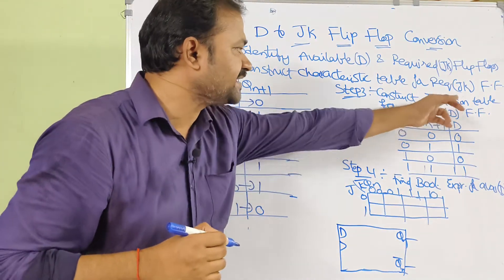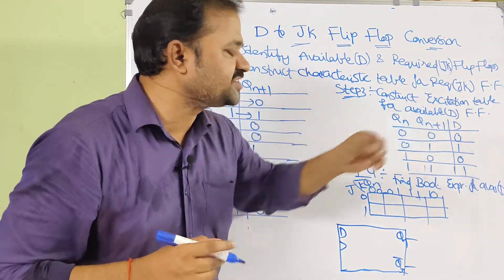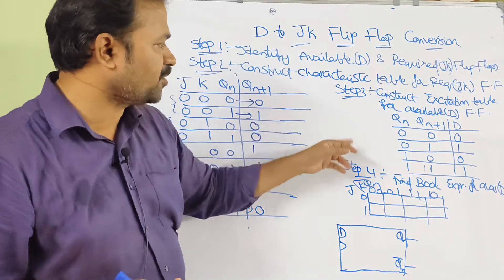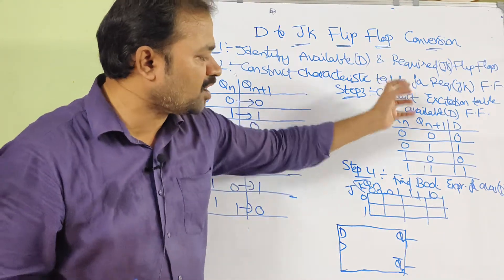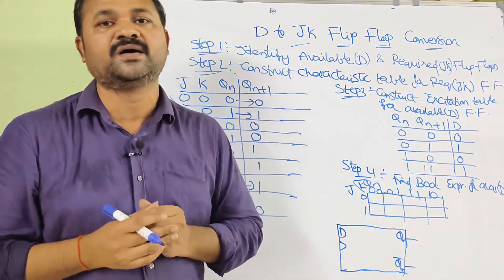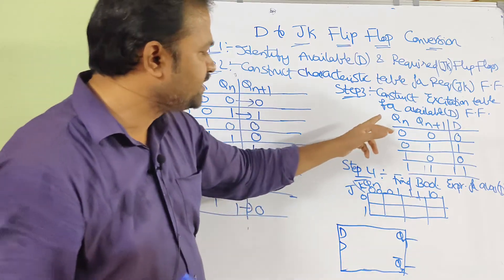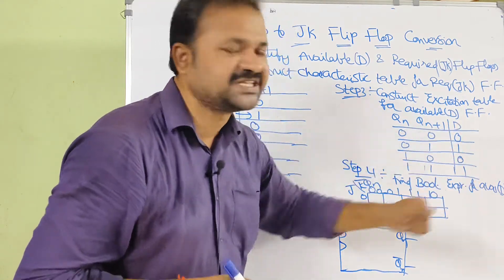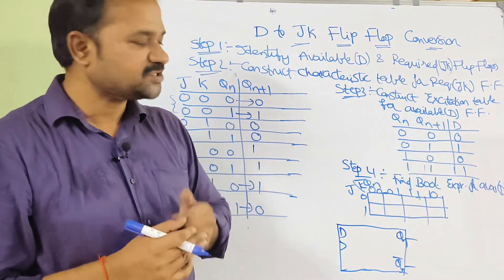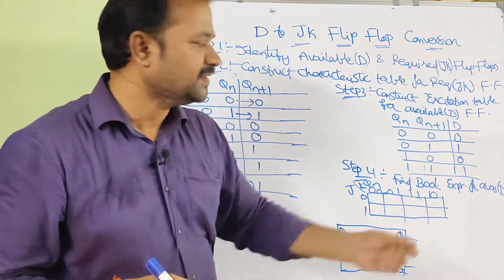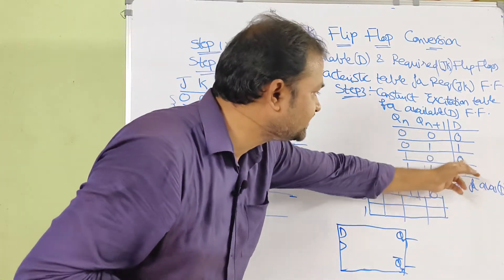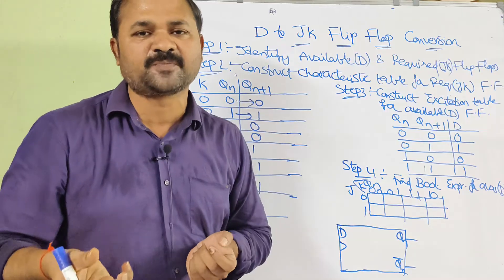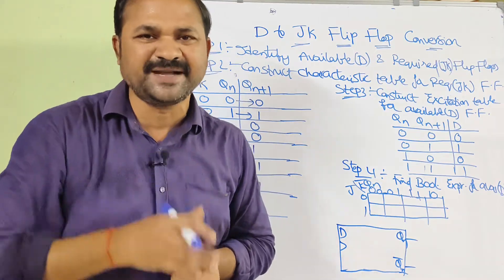Next, step 3: construct the excitation table for the available flip-flop, that is the D flip-flop. Steps 3 and 4 are based upon the available flip-flop. Here Qn and Qn+1 are the inputs and D is the output. The output is very simple — D is nothing but Qn+1, because with the help of the D flip-flop we store some data.